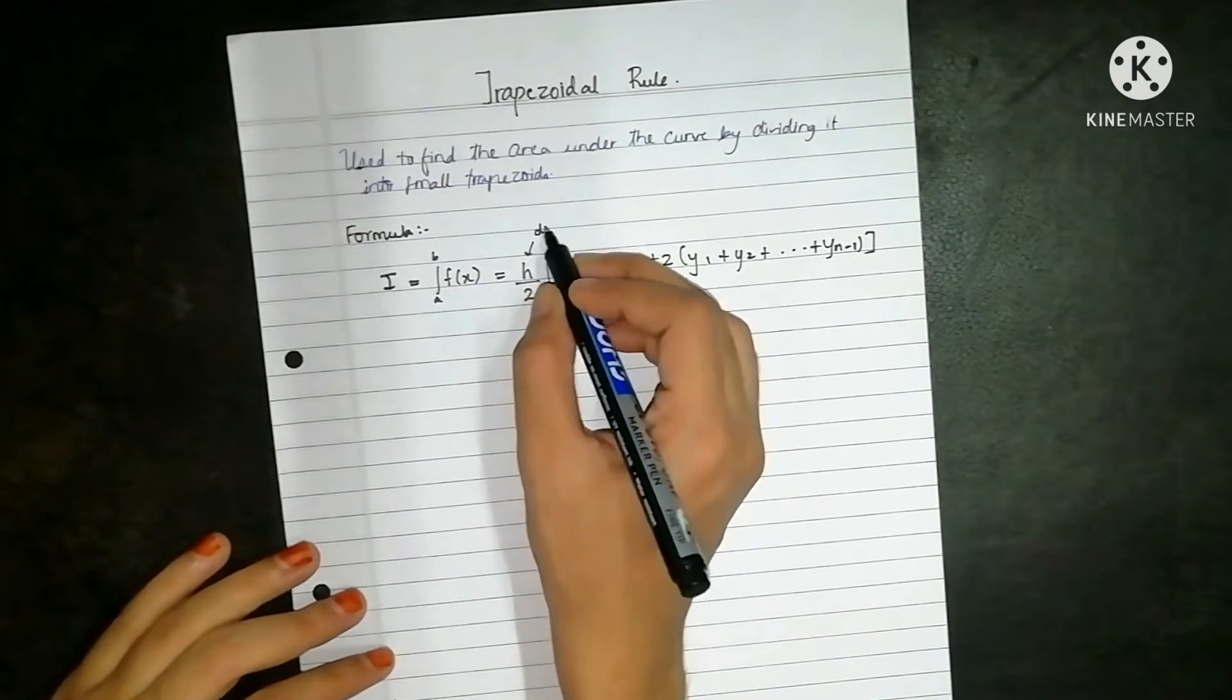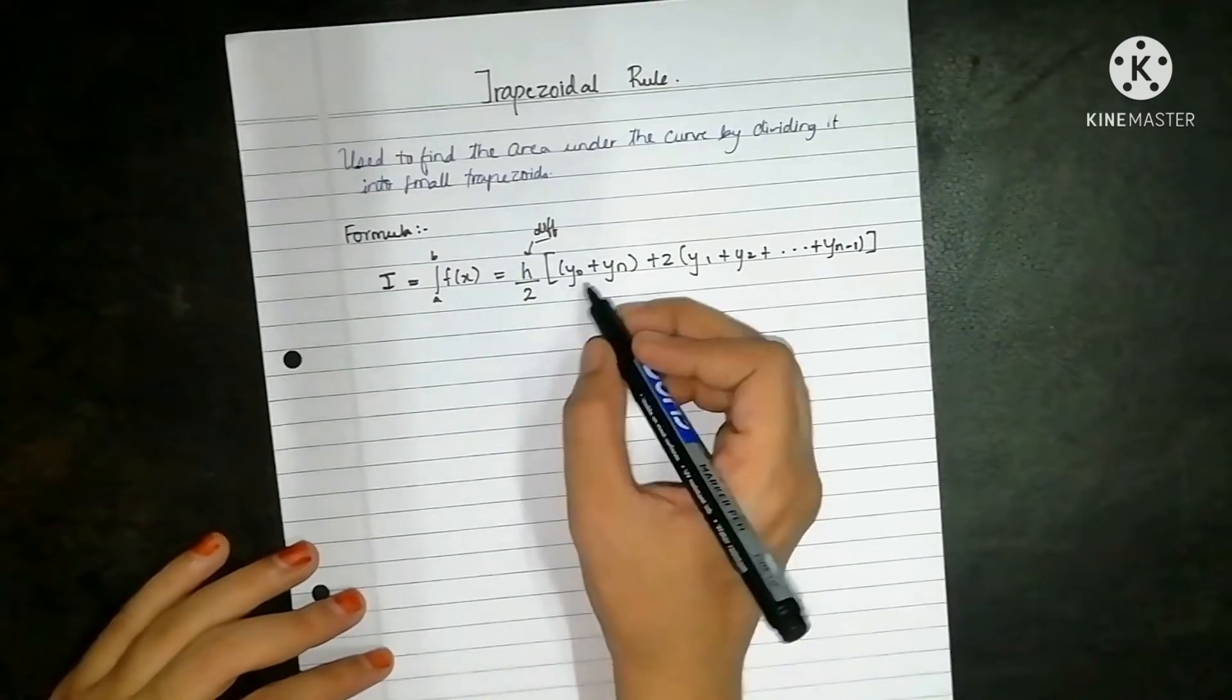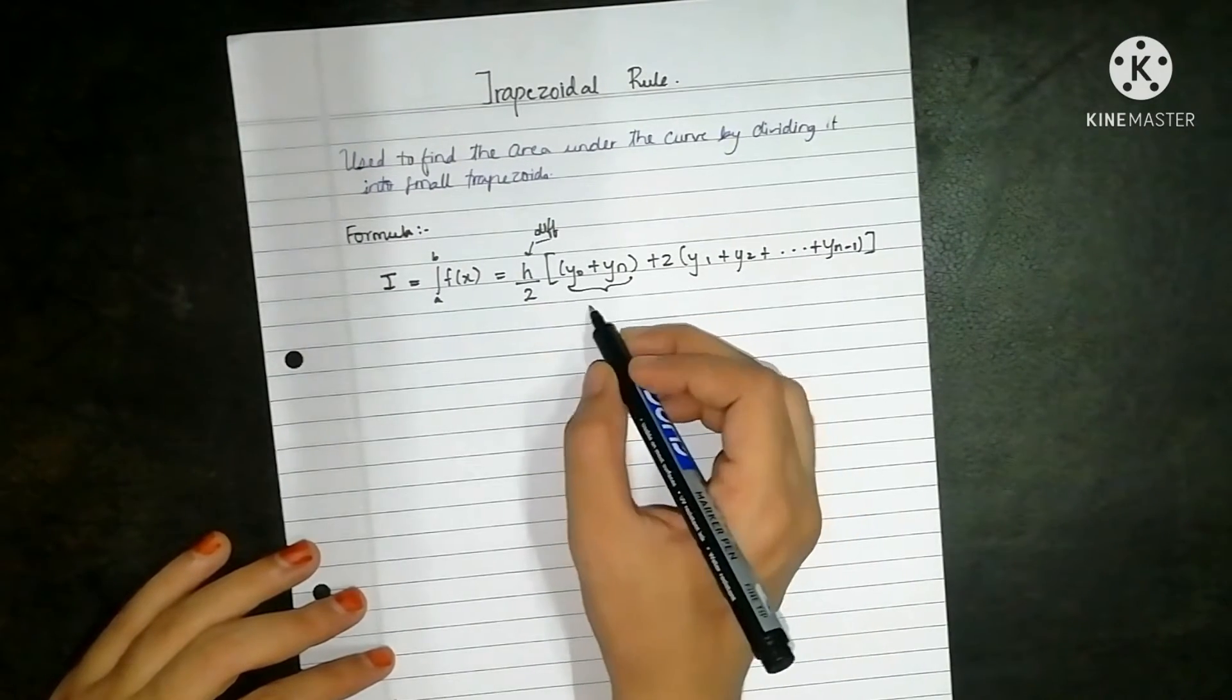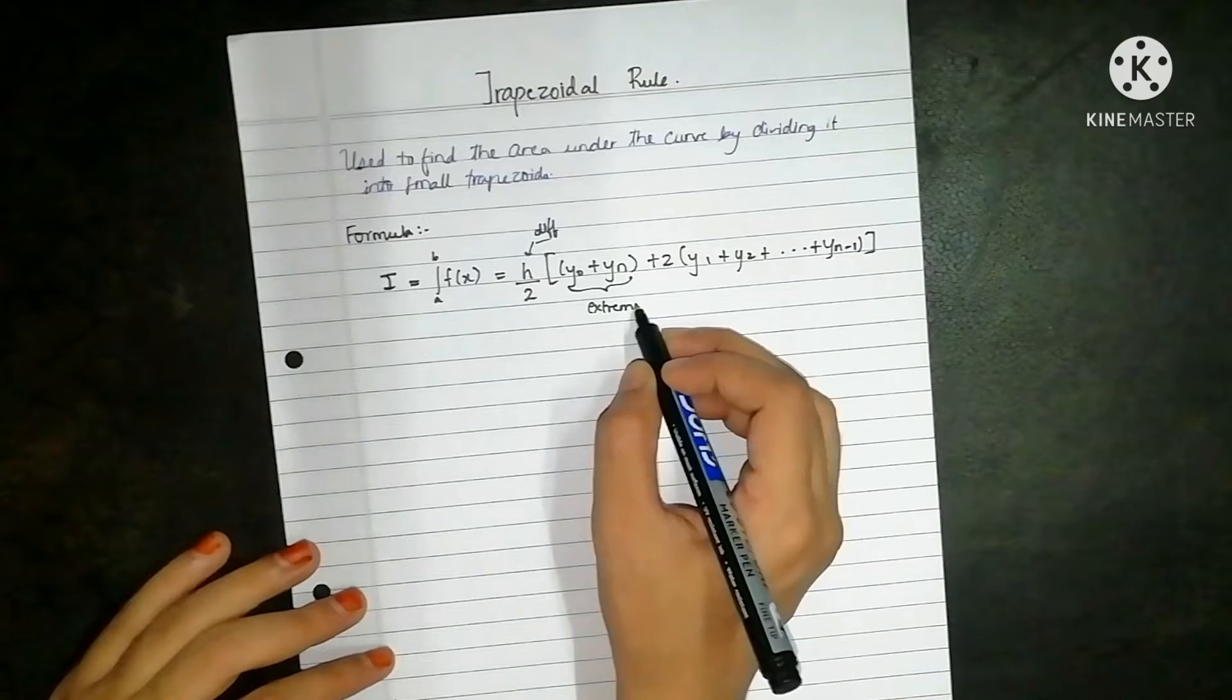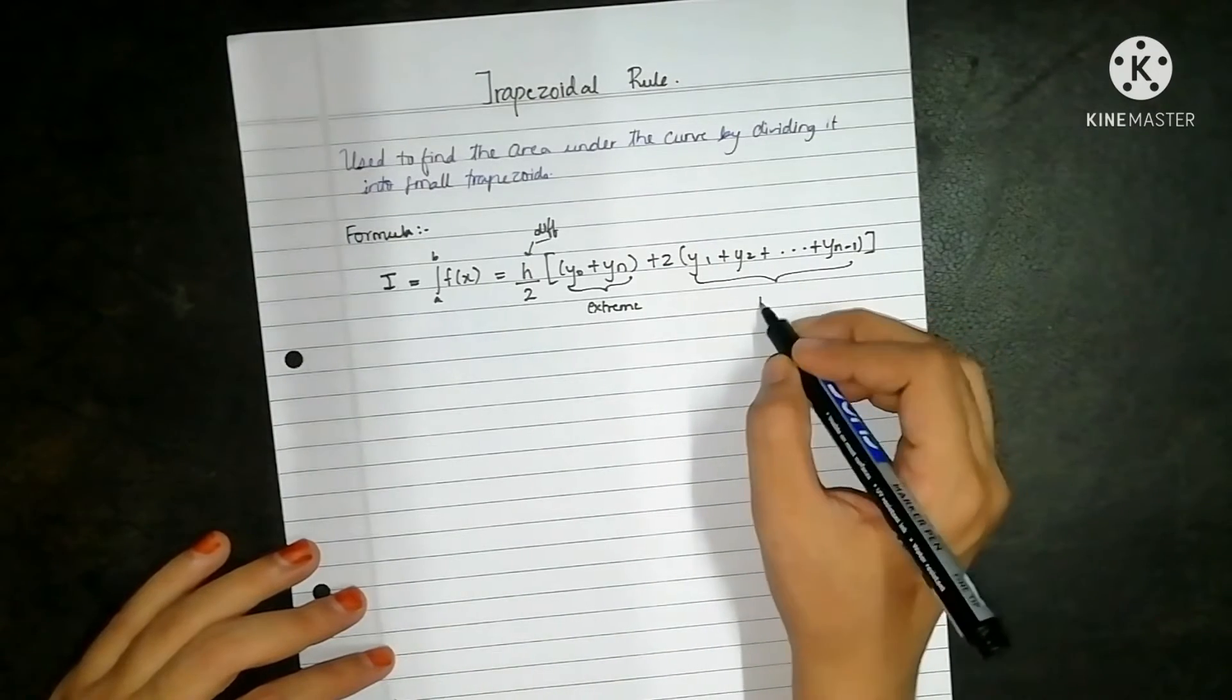Here h is the difference that we get to see in the reading. y0 and yn are the extreme coordinates and here we have the remaining coordinates.